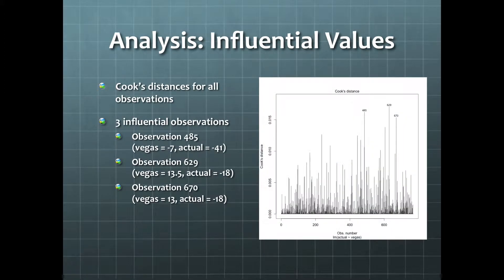We're also interested in the observations that most influenced our analysis, which can be found using Cook's distance. This plot identifies three influential observations, number 485, number 629, and number 670.